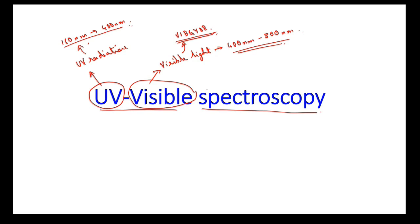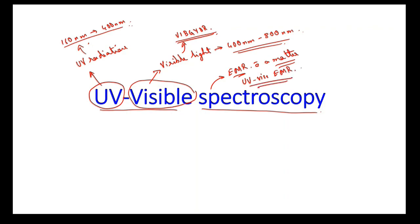In our last class, we discussed what spectroscopy is. Spectroscopy is nothing but the understanding of electromagnetic interactions of electromagnetic radiation with matter. Similarly, in UV-visible spectroscopy, the interaction of UV-visible radiation with matter is studied.